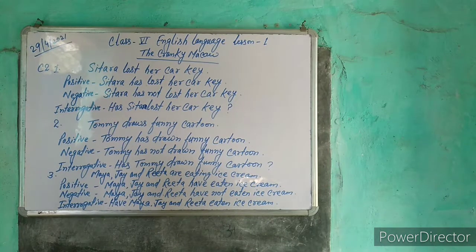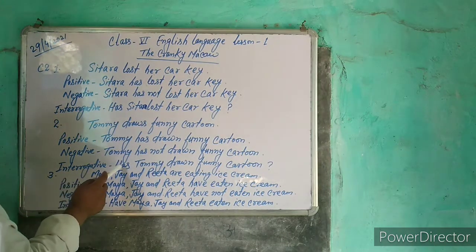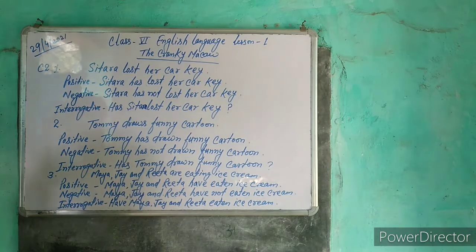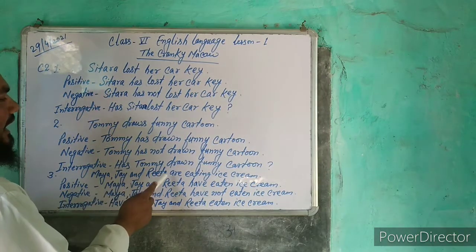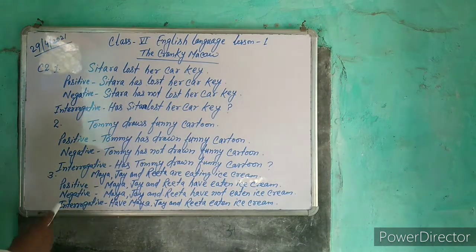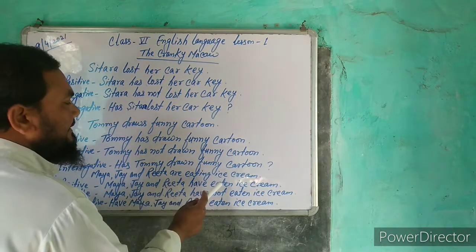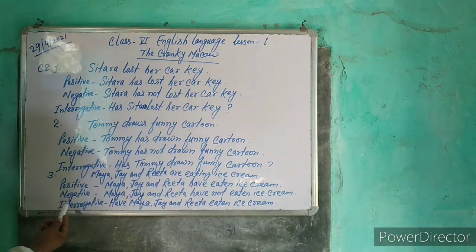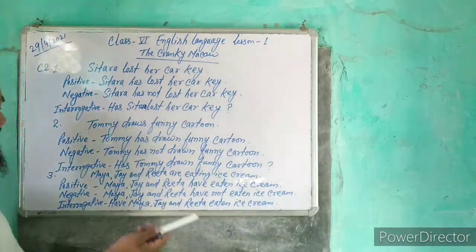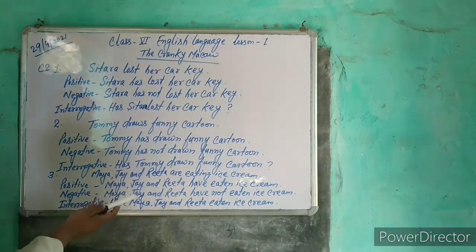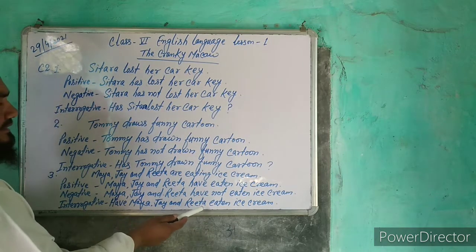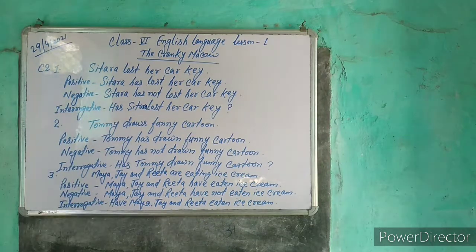The interrogative means a question. The interrogative sentence is: 'Has Tommy drawn funny cartoons?' The third sentence is: 'Maya, Jay and Rita are eating ice cream.' The present perfect tense positive sentence is: 'Maya, Jay and Rita have eaten ice cream.' The negative sentence is: 'Maya, Jay and Rita have not eaten ice cream.'